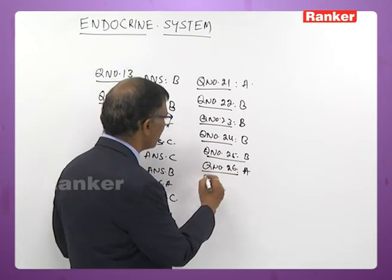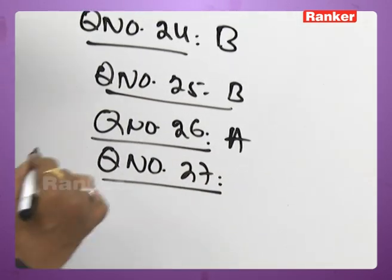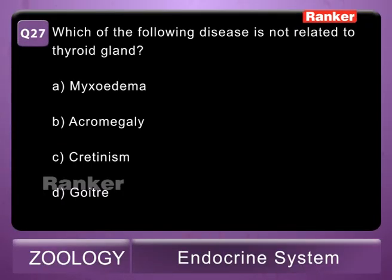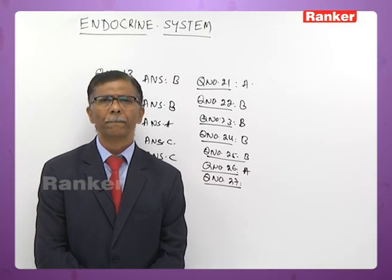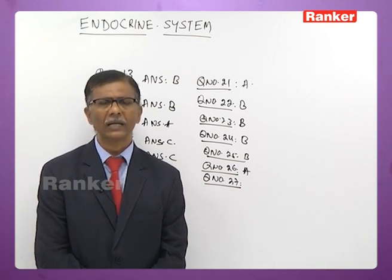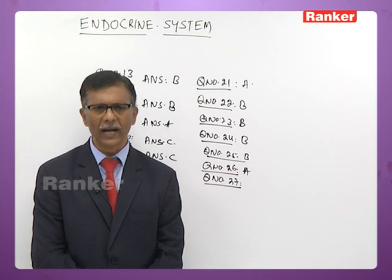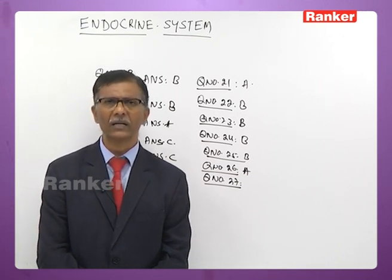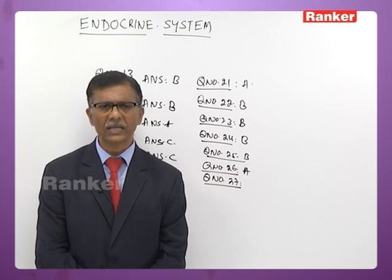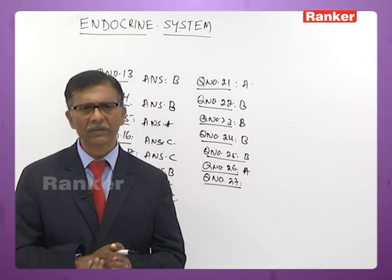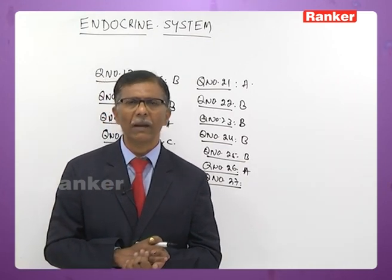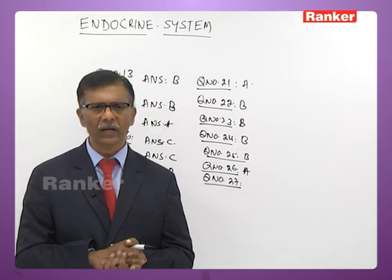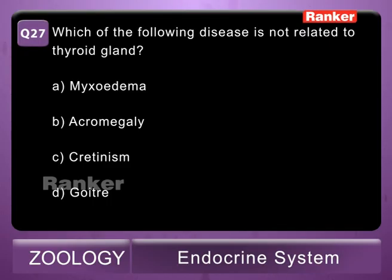Twenty-seventh question: which disease is NOT related to the thyroid gland? A - myxedema, B - acromegaly, C - cretinism, D - goiter. Myxedema is due to thyroxine deficiency in adults. Acromegaly is due to excess secretion of growth hormone in adults after puberty — not related to thyroid. Cretinism is due to thyroxine deficiency in infants. Goiter is due to lack of iodine. The correct answer is B — acromegaly.